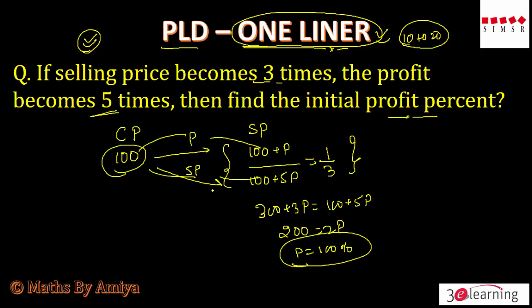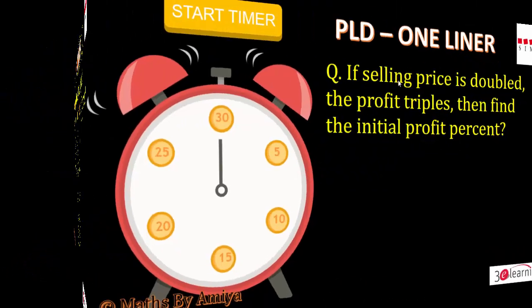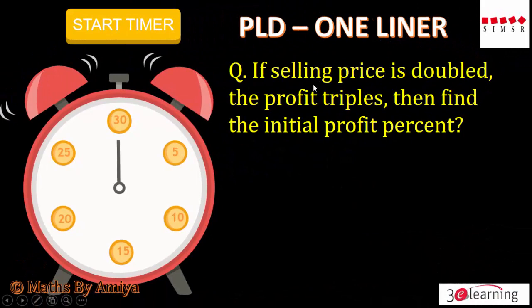Now I want you to take a piece of paper. We will practice 3 questions, and for each question you will have only 30 seconds. My aim is to solve each question in 20 seconds. Question number 1: Price doubled, profit triples. Find the profit percent. Your time starts now.